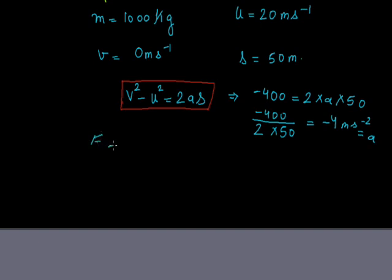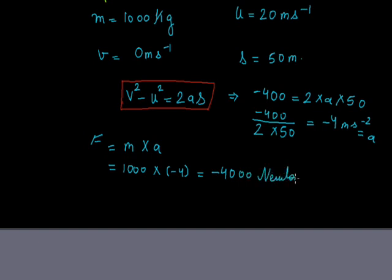Now we want F. F = M × A. We know M is 1000 and A is −4. So F = −4000 Newton. The minus sign signifies that there is deceleration — meaning the initial velocity of the vehicle is more, and the force is applied to decrease the vehicle's speed, which corresponds to the brakes bringing the vehicle to rest.